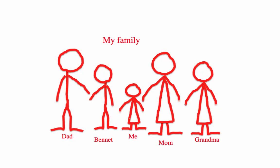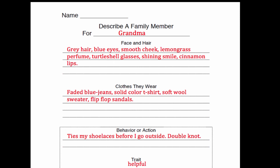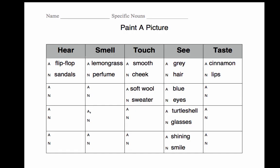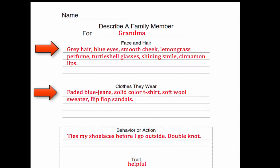Look at your family picture. Choose one of the family members that you can write about. This person is not your favorite member of the family, but it is someone you know well and could describe. Take a piece of the special family member template. Find descriptive details for the section on face and hair and for the section on clothes they wear. Remember, these are adjective-noun pairs. Use a painted picture worksheet to generate adjective-noun pairs, then transfer them to your describe-a-family worksheet.